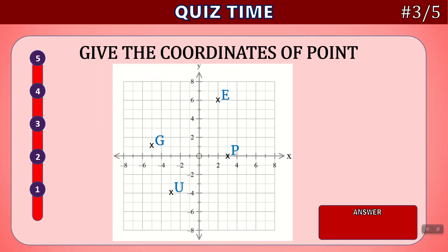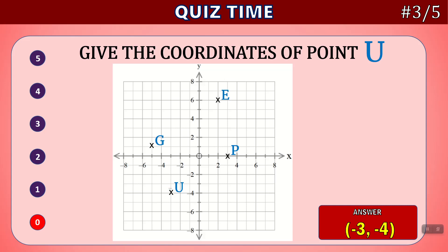Question three. Give the coordinates of point U. Time's up. U is located at minus three comma minus four. We can see if we go up to the x-axis, between minus two and minus four is minus three. And then if we go to the y-axis, here is minus four.